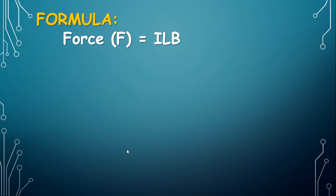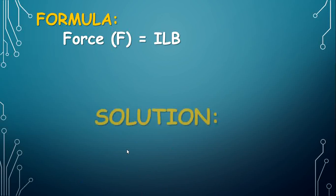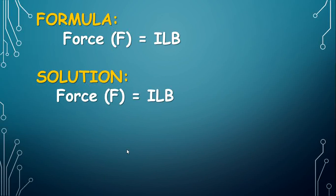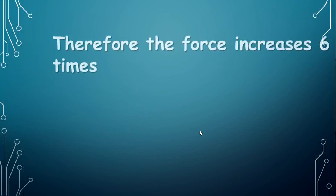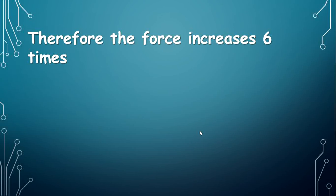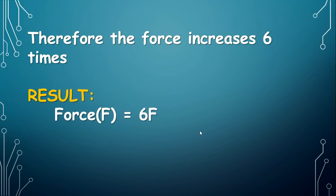Formula: Force F is equal to ILB, where I is the current, L is the length, and B is the magnetic field induction. Solution: F equals I times L times B, substituting I equals 4I, L equals L by 2, B equals 3B. Cancelling 4 and 2 gives 2I into L into 3B. Multiplying 2 and 3 gives 6ILB. Since ILB equals F, the force increases 6 times. Result: Force F is equal to 6F.